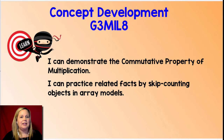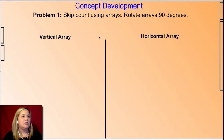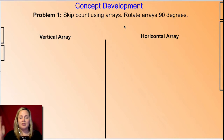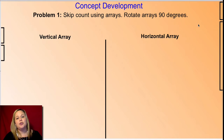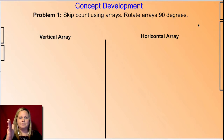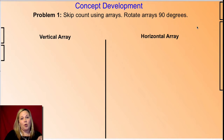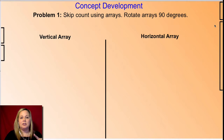Let's jump in and get started with our first problem. We're going to talk about rotating arrays — how they are vertical when going up and down, and horizontal when going side to side. I'd like you to turn your whiteboard so it's vertical, and then skip count by threes four times, writing down the numbers as you say them.